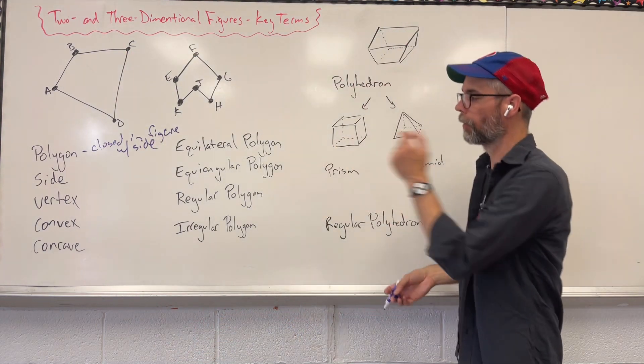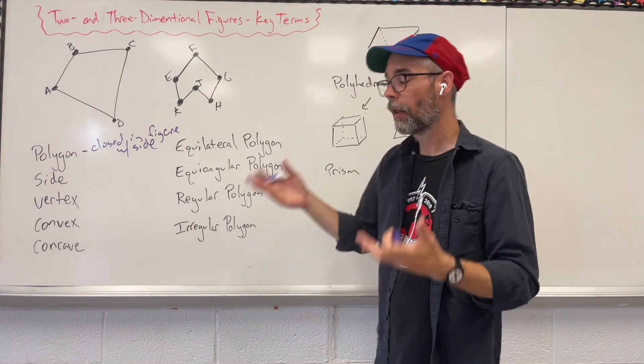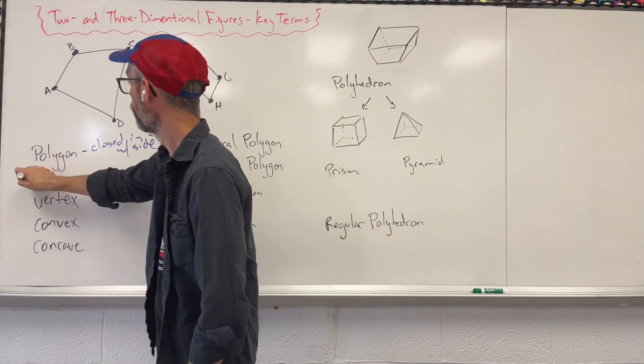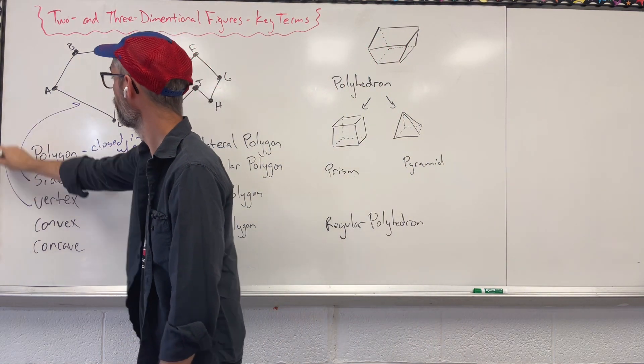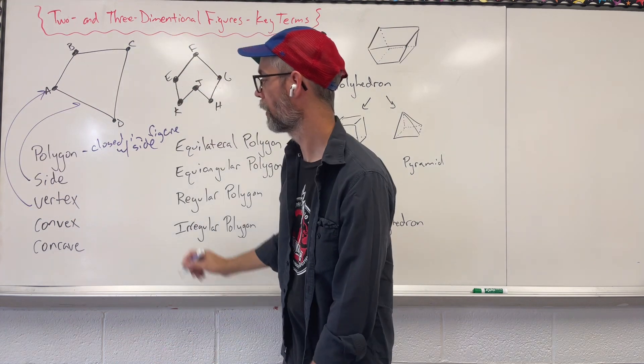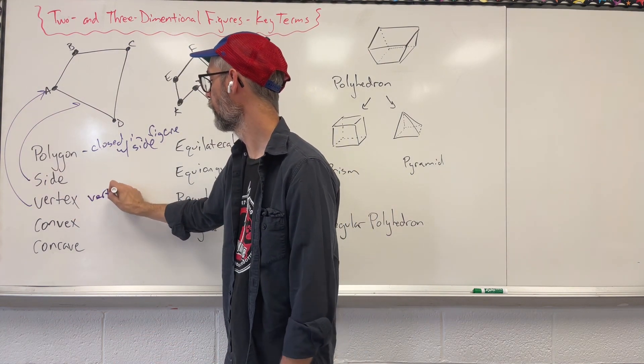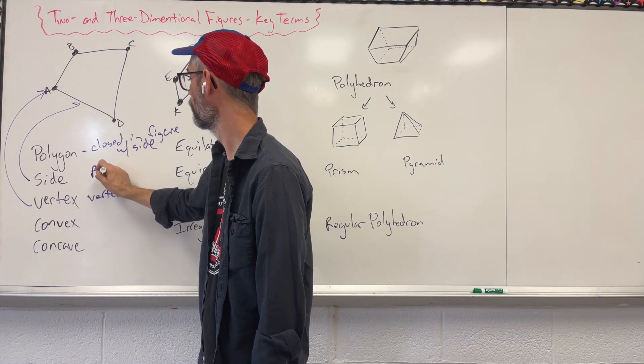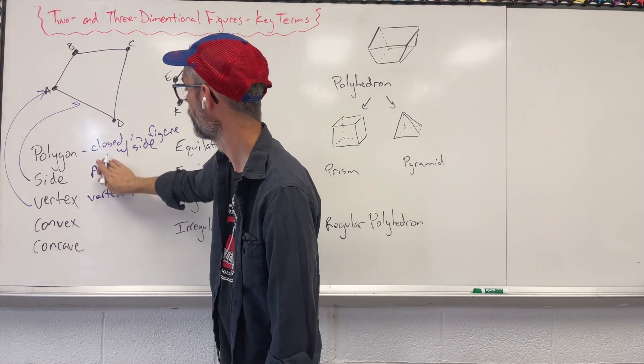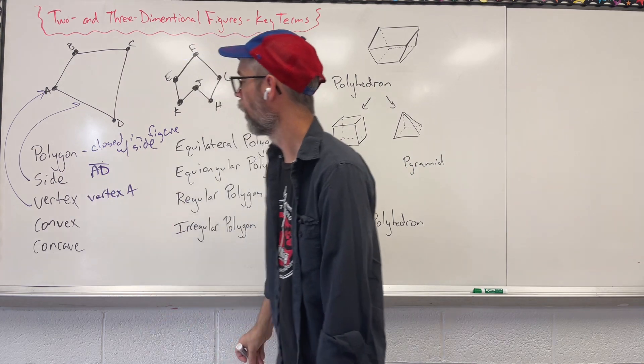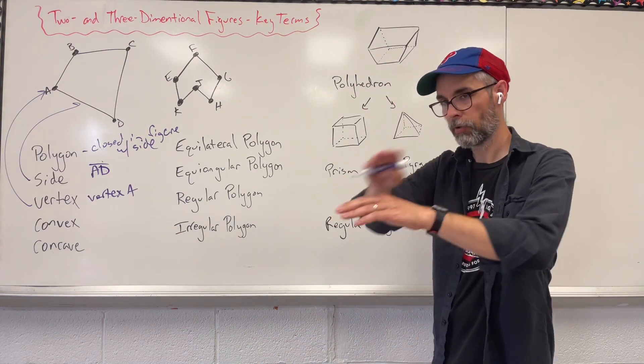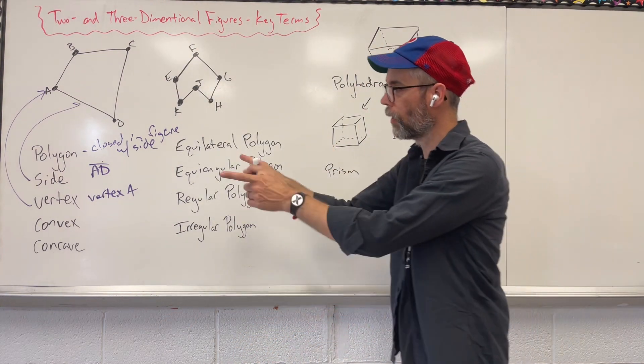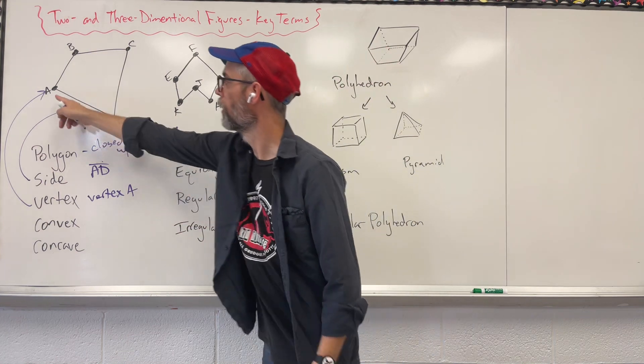Leading up to our next two, a polygon has two different main parts or main components to it. We have the sides and we have the vertex, where we say vertex A and we'll say side in this case AD. And notice that we put just that straight line, no endpoints, no arrows, just because that thing stops.